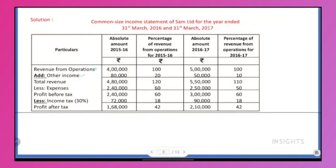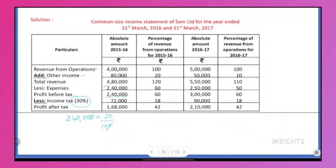Revenue from operations plus other income: total income is 4,80,000. You subtract expenses: 2,40,000, so that is profit. At 30% tax: 2,40,000 × 30% = 72,000 tax. Deduct tax, so profit after tax is 1,68,000.